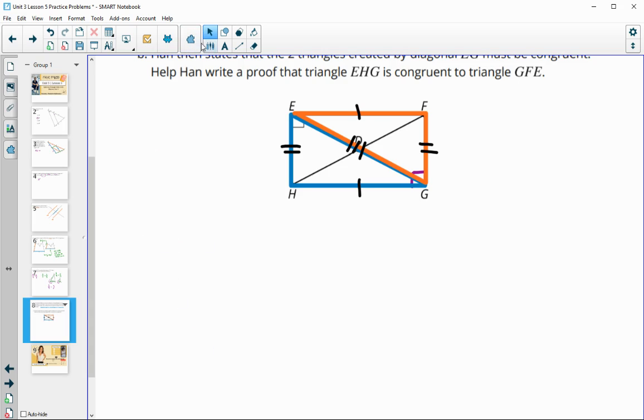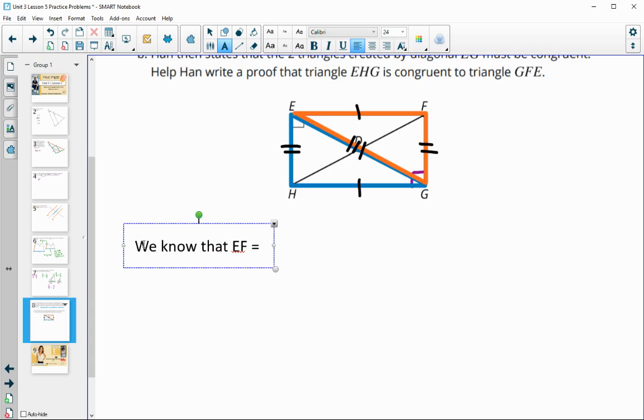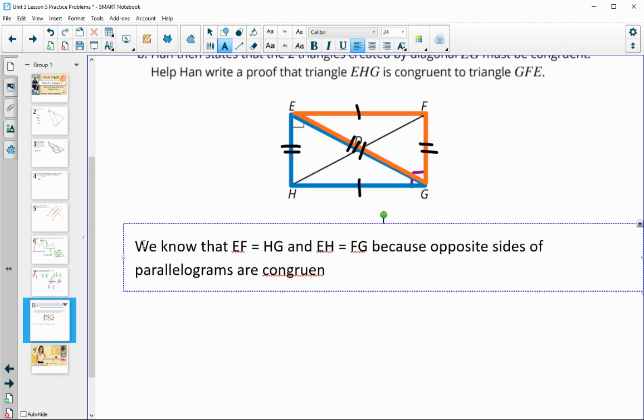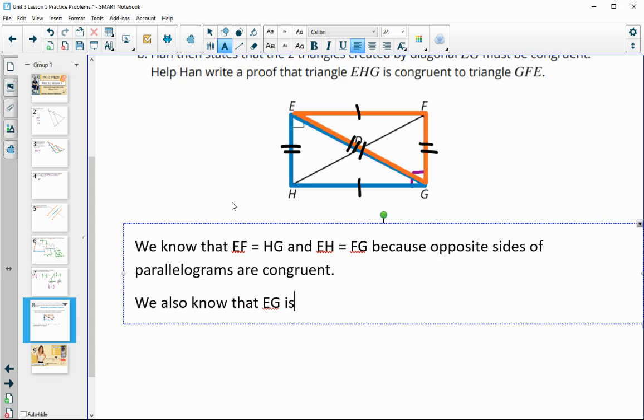So now we just have to get that written out. So we know that EF is congruent to HG and EH is congruent to FG because opposite sides of parallelograms are congruent. So that was that top and bottom, left and right. We also know that EG is congruent to EG because it is the same segment in both triangles.